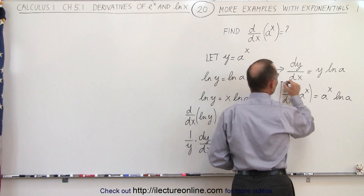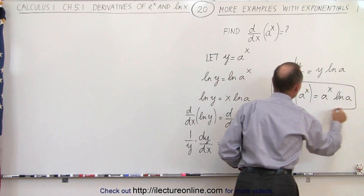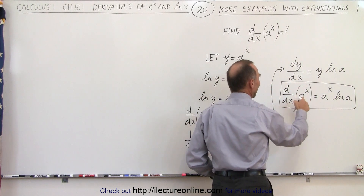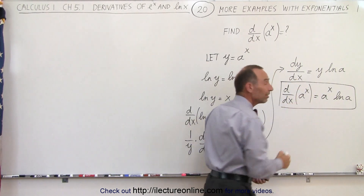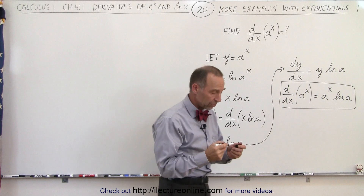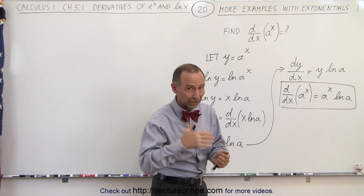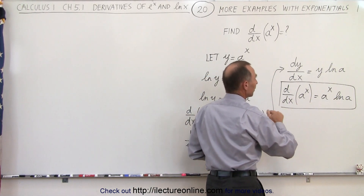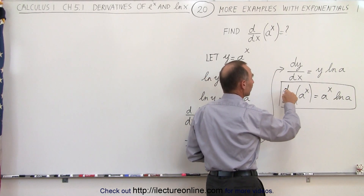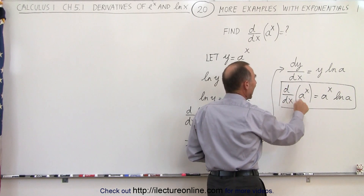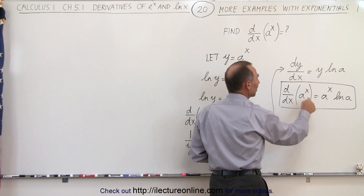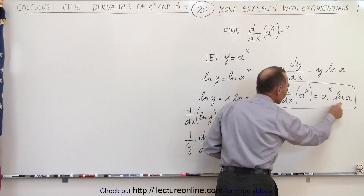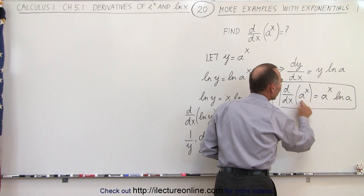And so this now shows that if we take the derivative of a to the x instead of e to the x — remember, when we take the derivative of e to the x, we get e to the x. But if we take the derivative of a to the x, that's equal to a to the x times the natural log of a.